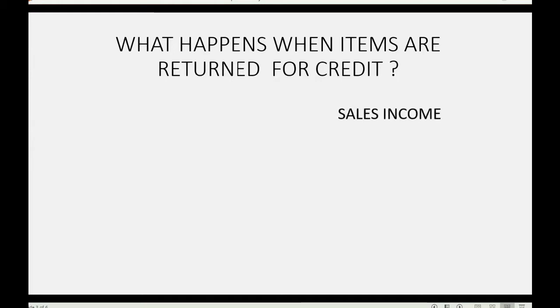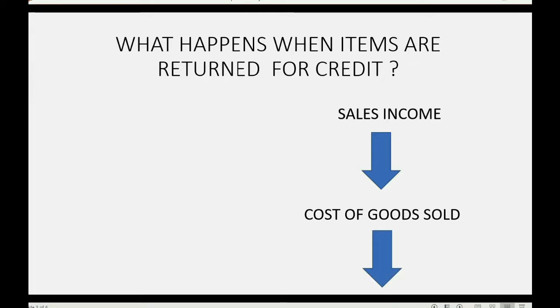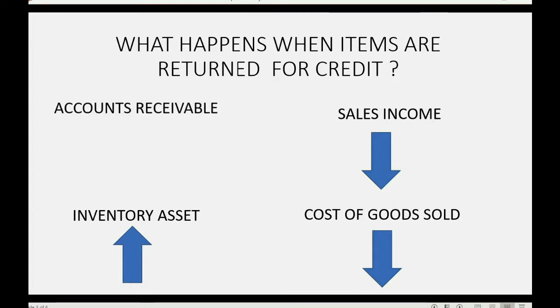When you return items for credit, sales income will decrease by the sales price of the items returned, and cost of goods sold will decrease by the purchase cost — what you paid for the returned items. Inventory asset will increase because you have more inventory available for sale. And accounts receivable will decrease because the customer owes you less.